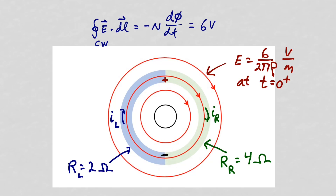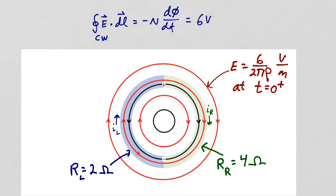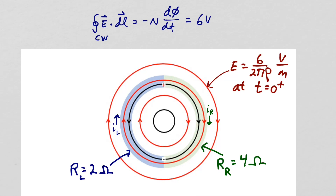In the left half ring, the electric field intensity from the positive charges terminating on the negative charges will be in the opposite direction of the electric field intensity coming from the changing magnetic flux in the solenoid. So the electric field intensity in the left half ring will be reduced as charges build up at the boundaries. In the right half ring, the electric field from the charges will be in the same direction as the electric field from the ramping magnetic flux, so the electric field intensity in the right half ring will increase as charges build up.